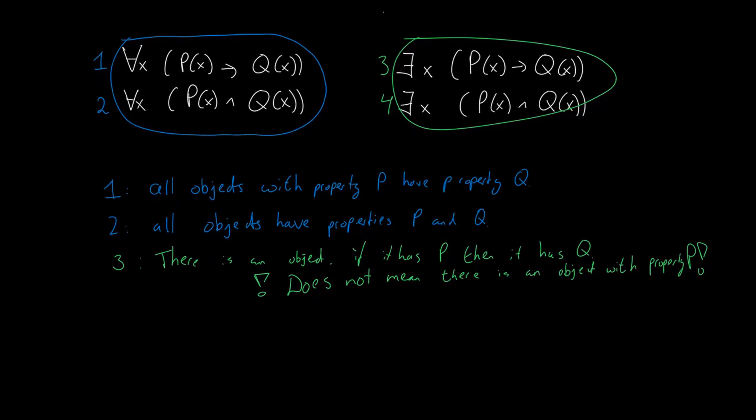It does not mean that there is some object with property p. So if we want to say that there is an object that has both property p and q we should use number 4. We should say that there is an x that has property p and has property q.